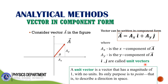What is a unit vector? A unit vector is a vector that has a magnitude of 1. If you take the magnitude of i-hat and j-hat, your answer is 1, and there is no unit — so it has a magnitude of 1 with no units. Its only purpose is to point, that is, to describe a direction in space.